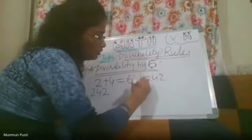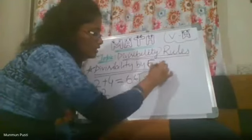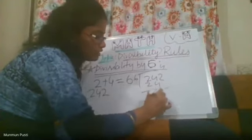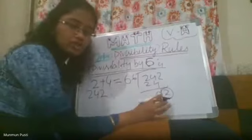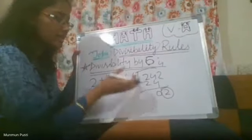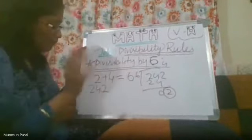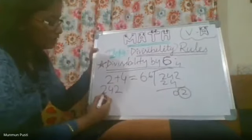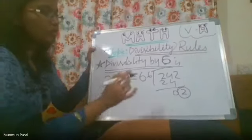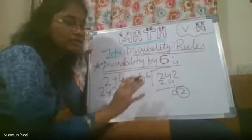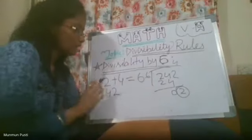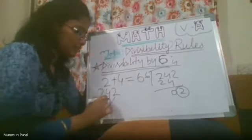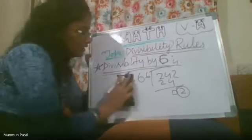Let me check 242 by 6 directly: if we do the actual division it takes time, but just by seeing the sum of the digits — 2 plus 4 plus 2 equals 8 — and we know that 8 is not divisible by 6, so we can clearly say that 242 is not divisible by 6. I hope this is clear.